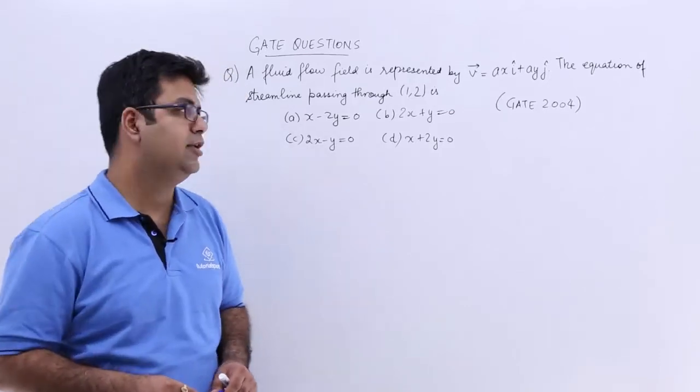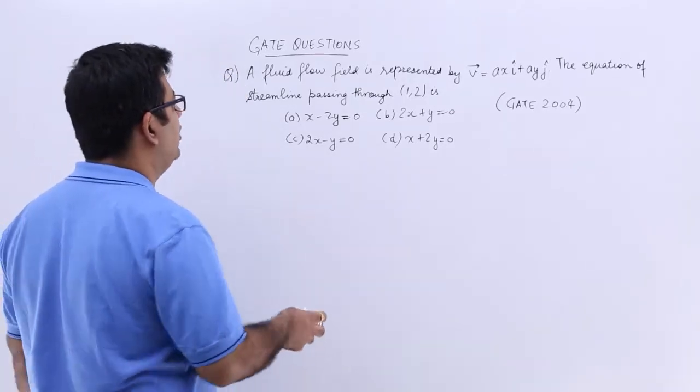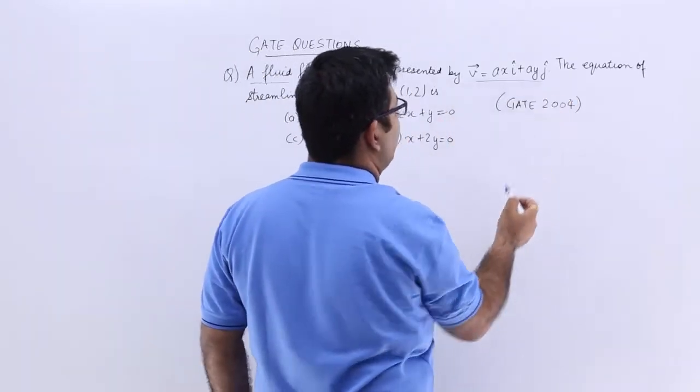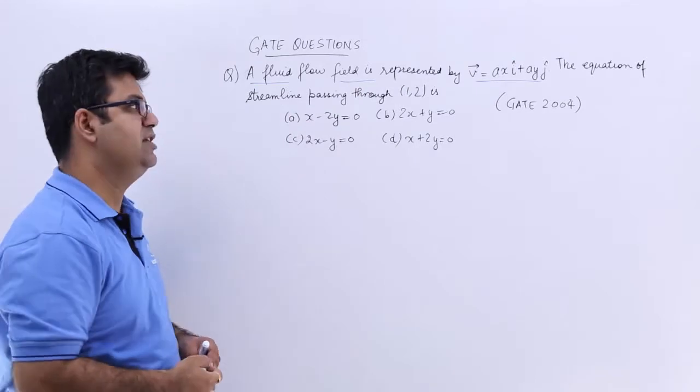Now let's look at question number 3. The question says we have a fluid flow field which is represented by axi cap plus ayj cap.